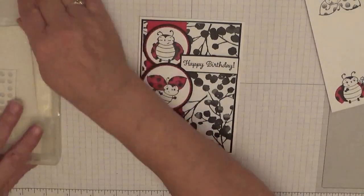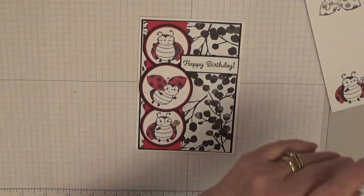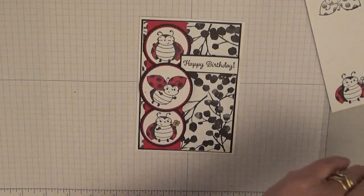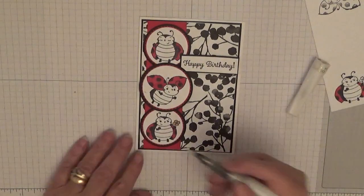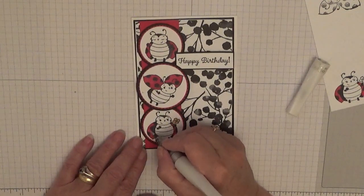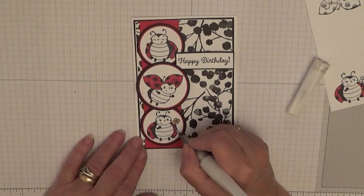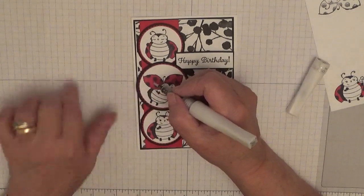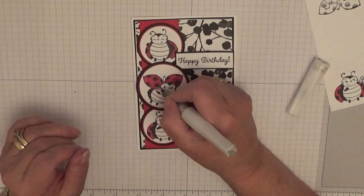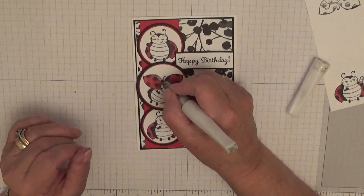Right, what I forgot to do is Wink of Stella on the wings just so they have a bit of glitter in them.